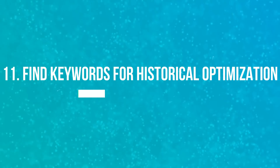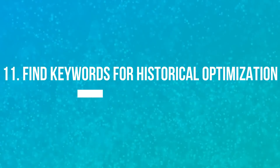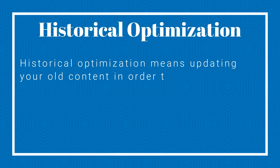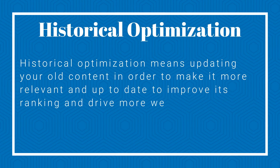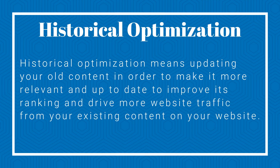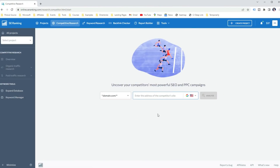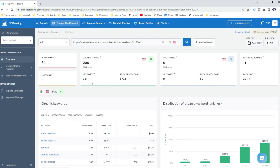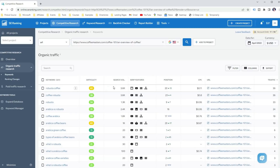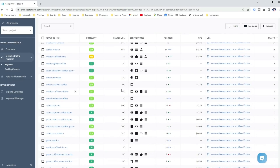The next way how I like to use a competitive research tool is when I'm doing historical optimization for my blog post or other pages on my website. Historical optimization is basically updating your old content in order to make it more relevant and up-to-date, to improve its ranking and drive more website traffic from your existing content. To do that, I want to see what keywords the page is ranking for so I can blend them within the content, expand it with new ideas, and provide more value, thus significantly enhancing the content. So I open the webpage I want to optimize in the Competitor Research Tool and open the Organic Keywords report. Now, I scan the keywords my page is ranking for to find any relevant keywords I could include within the content or even as a subtopic.